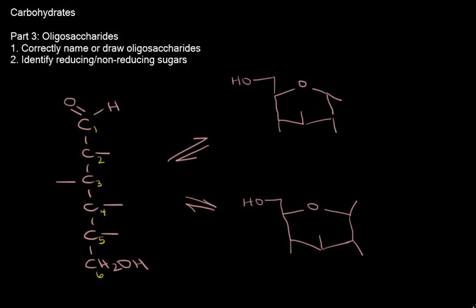First off, it's going to be important to interconvert Fischer projections shown here on the left with Haworth projections shown here on the right in order to name oligosaccharides, because oligosaccharides are more than one monomer of carbohydrates. We've only talked about monomers up to this point. This is one monomer, here's another, here's another. This is the linear form and these are the cyclic forms. If you compare the chemical formulas, all these are identical. If you compare the stereochemistry, all of these are identical.